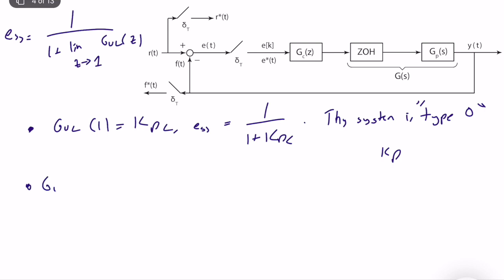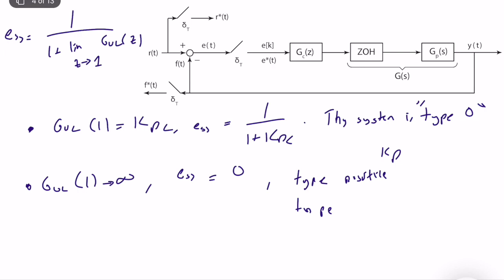When G_OL(1) goes to infinity, the steady-state error equals zero — these are type-n systems where n > 0. If your system is type 0, it has a constant steady-state error you can reduce by increasing K_dc. If it's a positive-type system, the steady-state error is zero, which is good for tracking.